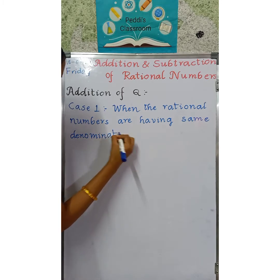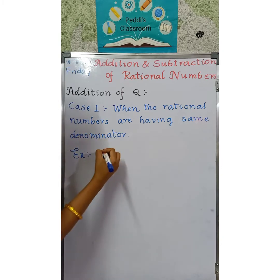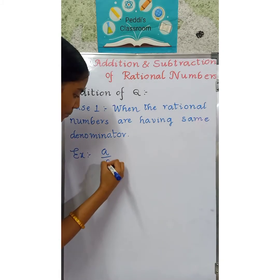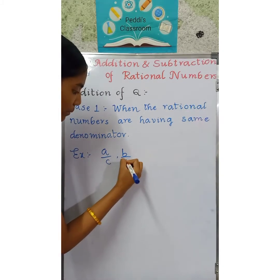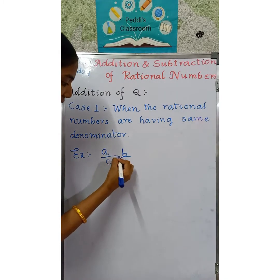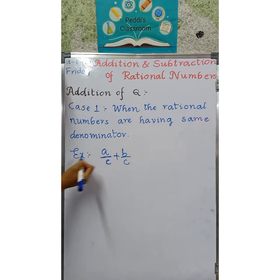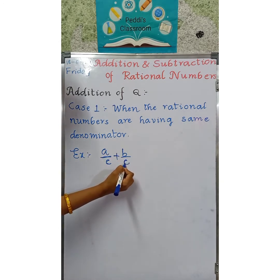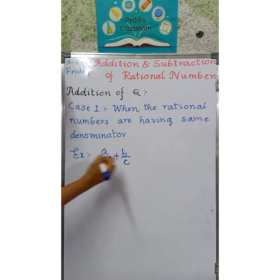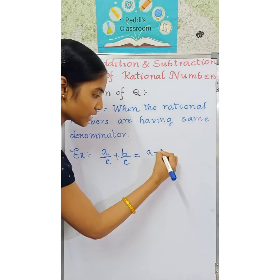For example, if I take a rational number A by C and another rational number B by C, I need to add these two rational numbers. One thing we should notice is that this rational number has denominator C and this one also has denominator C, where A, B, C are integers and C will not be equal to 0. So that is equal to A plus B by C.